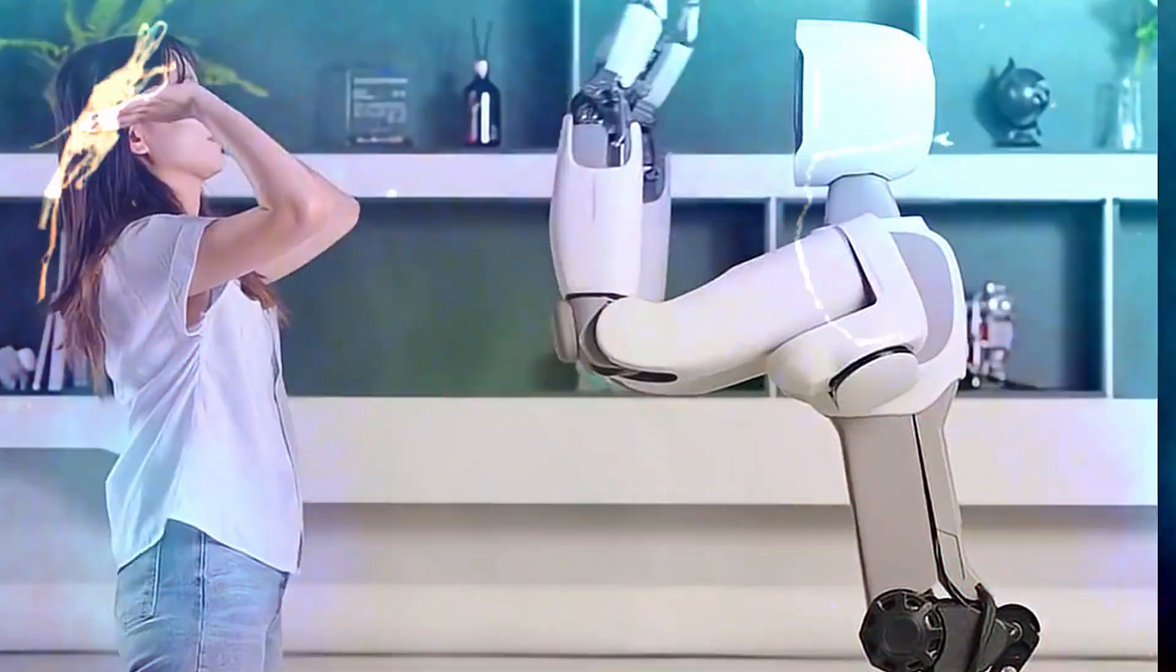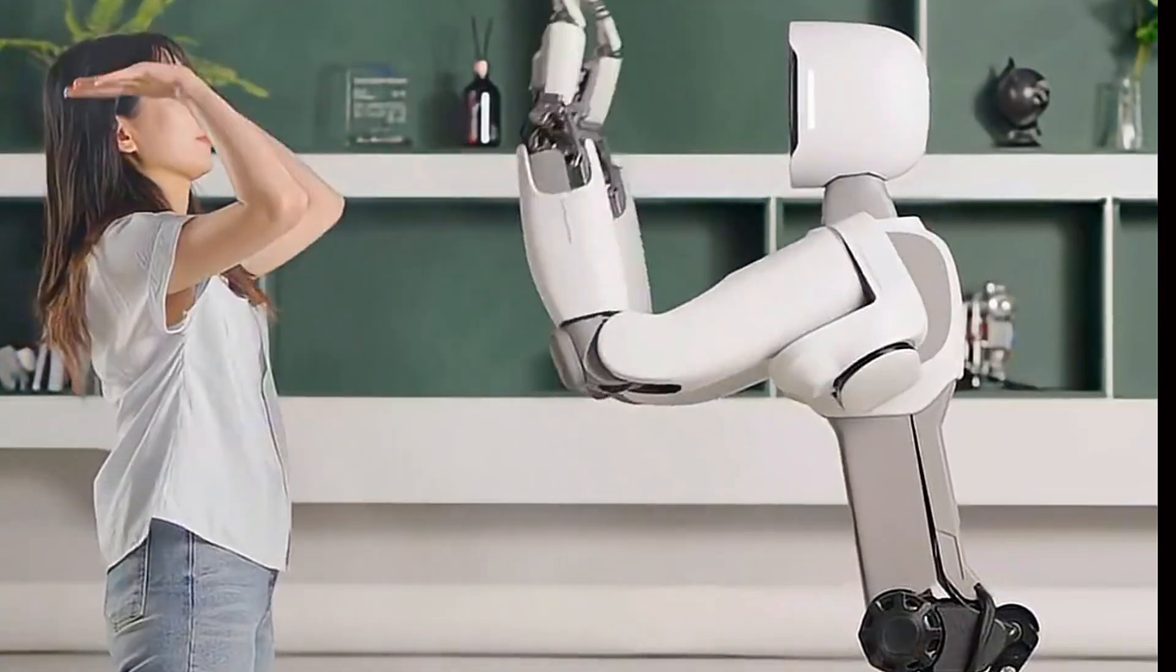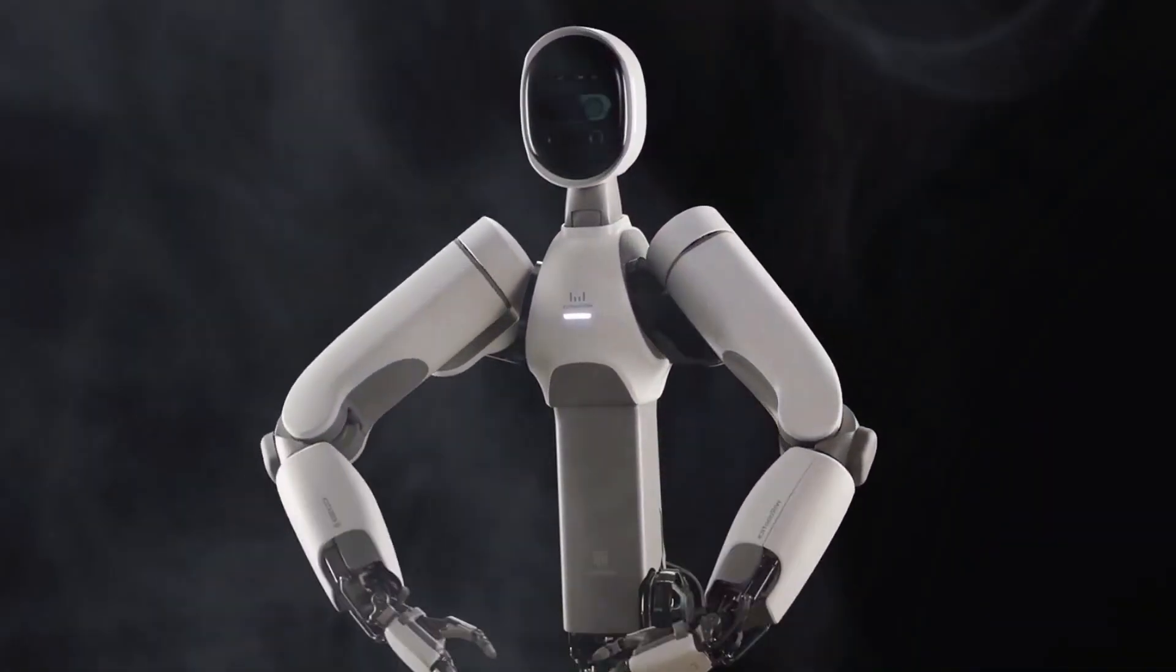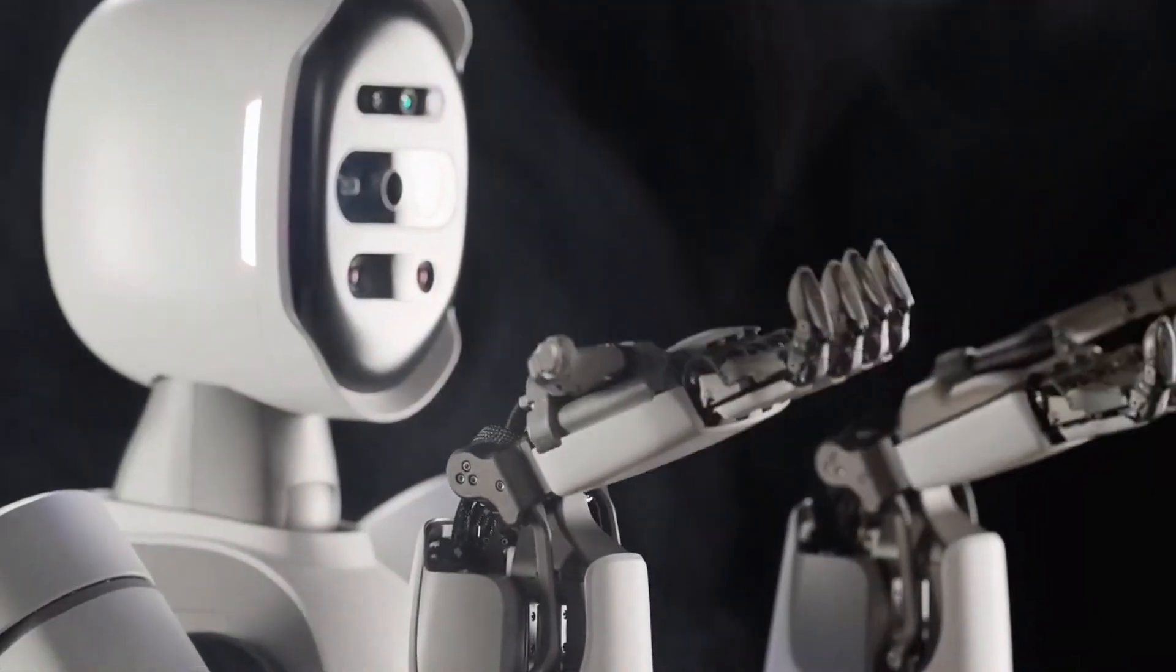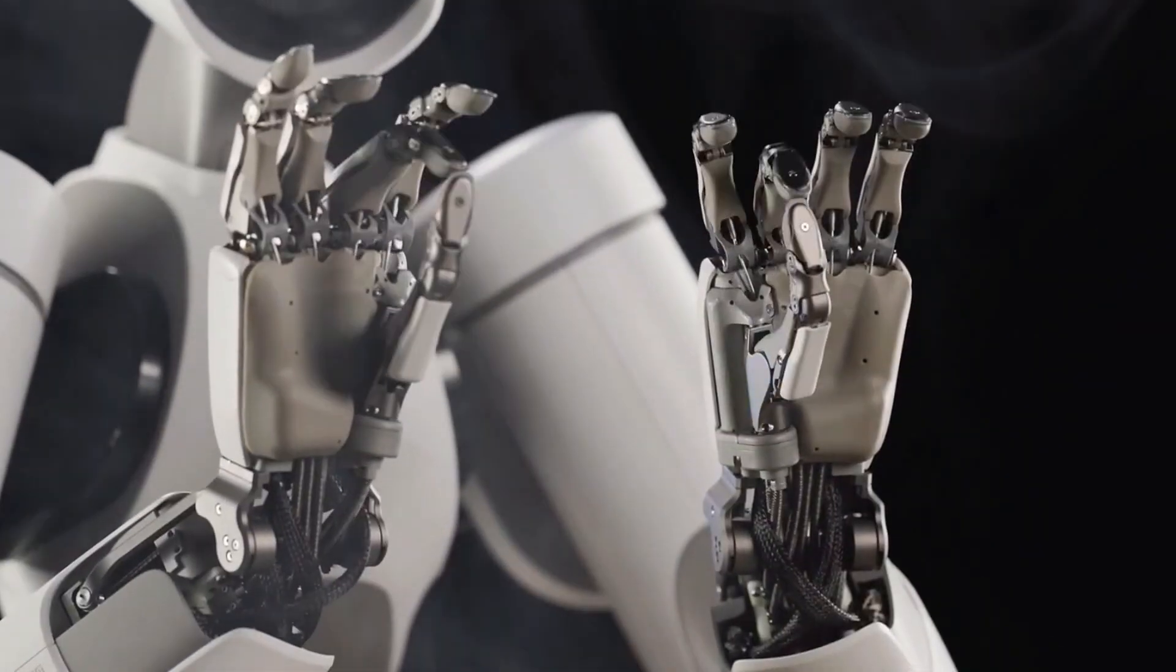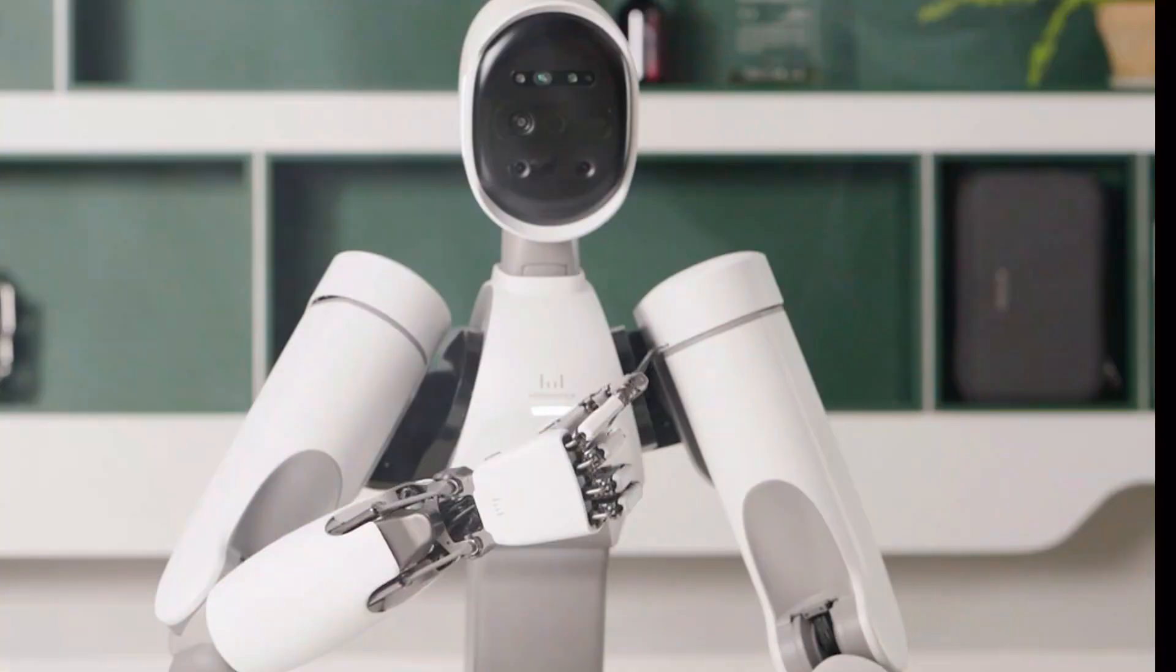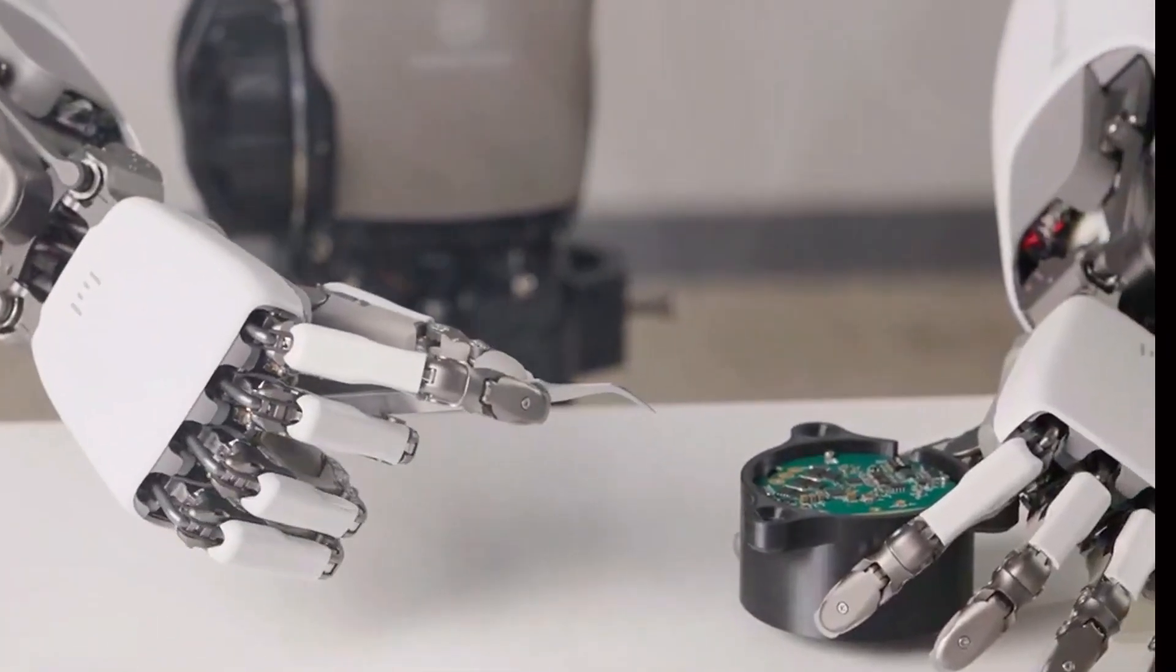Imagine walking into a lab expecting to see the usual clunky humanoid robot shuffling around. Instead, what you see is a machine sprinting, spinning and moving with more control than some athletes. That's not a sci-fi movie, that's South Korea's new humanoid robot Alex and it might just mark the moment robots crossed into true human level agility.